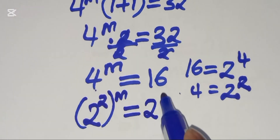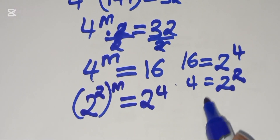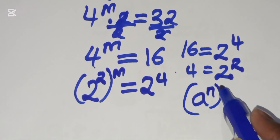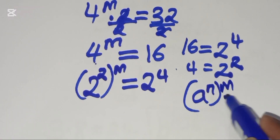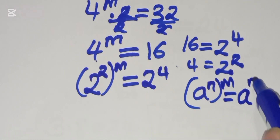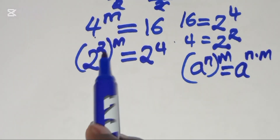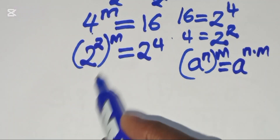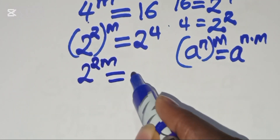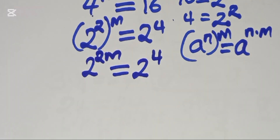Applying the indices identity — whereby (a^m)^n can be expressed as a raised to the power m times n — we get 2 raised to the power 2m, which is equal to 2 raised to the power 4.